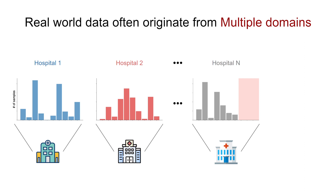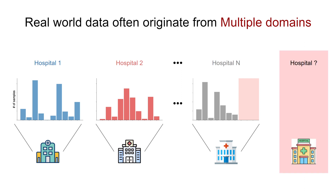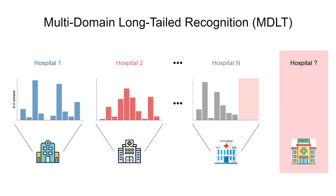Here, due to the potential differences in geographical locations and patient populations, different hospitals effectively act as different domains. Furthermore, when the model development is finished, we hope the model to also work on data from an unseen hospital, regardless of what its label distribution is. Therefore, we formally define this problem as multi-domain long-tailed recognition, MDLT in short. The goal of MDLT is to learn from multi-domain imbalanced data and generalize to all domains and all classes.